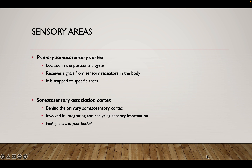If you feel coins in your pocket — this is the kind of example we have here — without even looking at the coins, you likely know what coin you're feeling just by its texture, its size, and by actually feeling it. This interpretation of sensory stimuli is occurring within the somatosensory association cortex. Likewise, if you feel something and then begin to associate it with a past memory or past experience, that is also happening in the somatosensory association area.